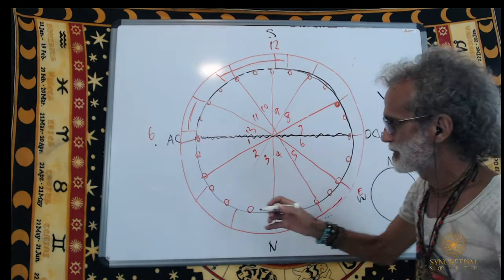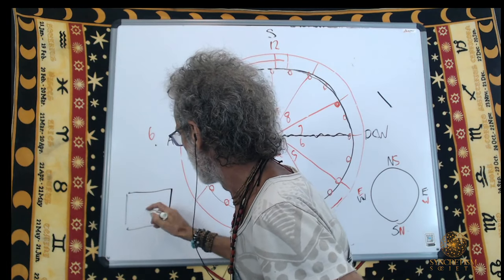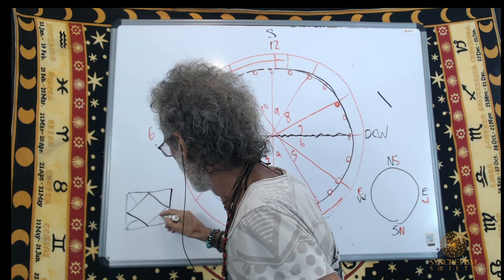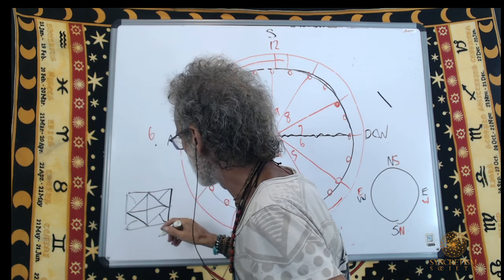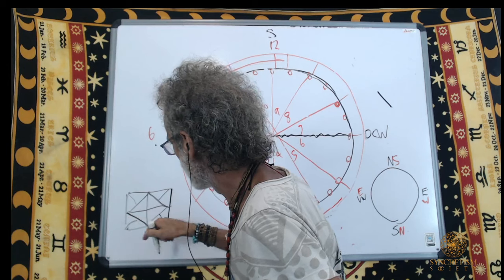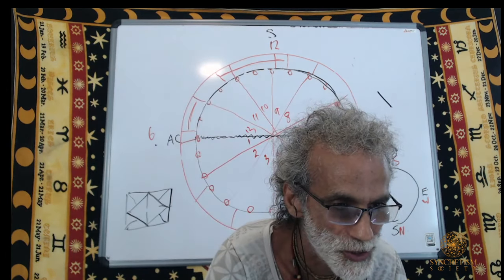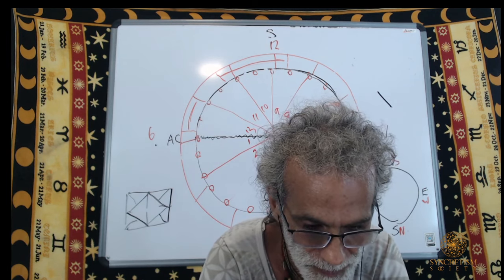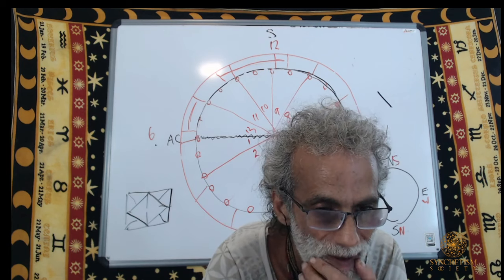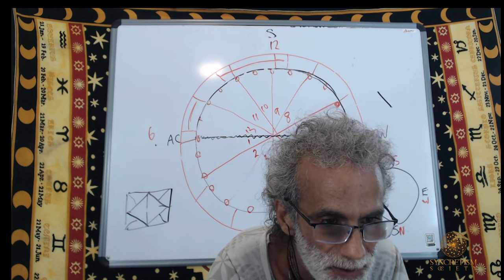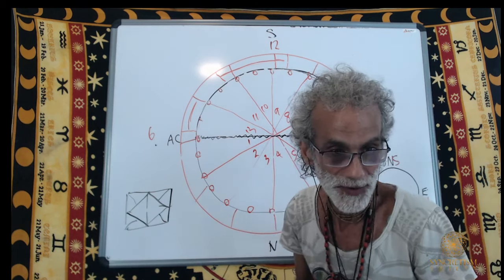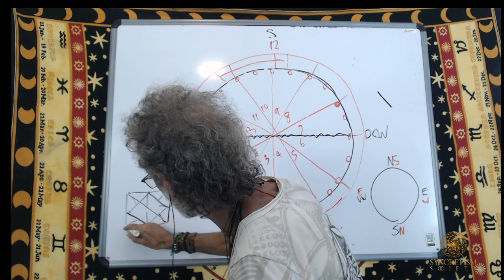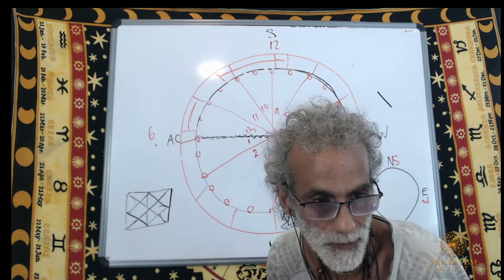Astrology is a northern hemisphere-centred science — it simply has to be. In future lectures we'll see how that affects people born in the southern hemisphere. But always remember: in astrology the MC is always south, regardless of whether you're in Australia or North America. You are standing on the Earth, looking south to see the Sun between the tropics on the ecliptic.